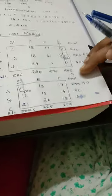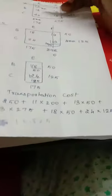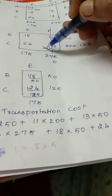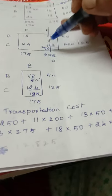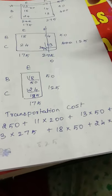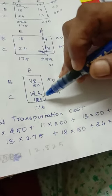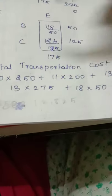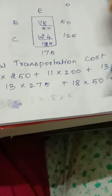Our total transportation cost: we multiply each cost value and its fixed quantity and add them all. So: 250×10, 200×11, 50×13 with the respective unit cost, 18×50 and 24×125. After calculating, we arrive at our total transportation cost using the least cost method as 12,825. This is known as the least cost method.